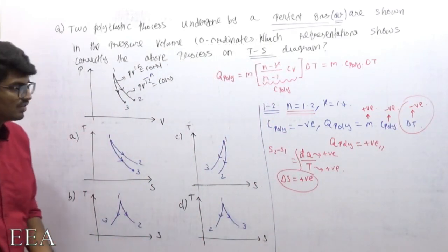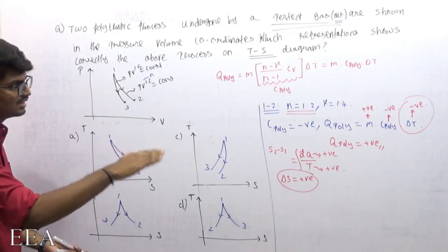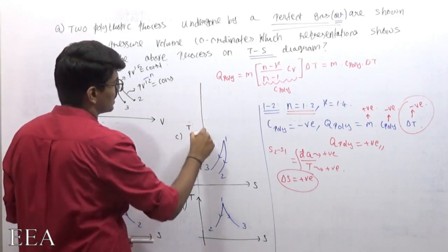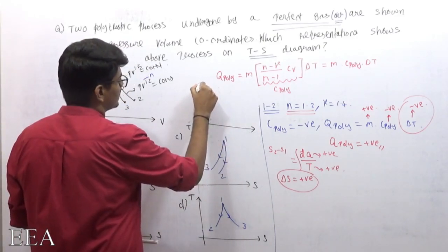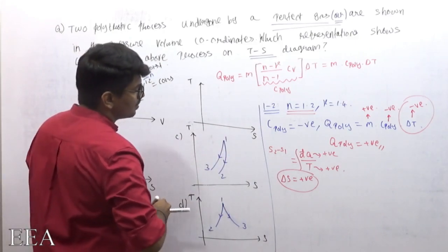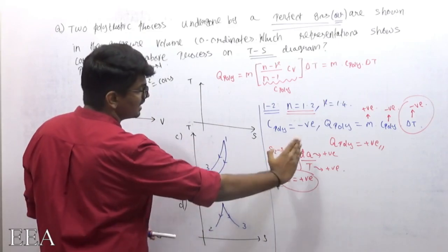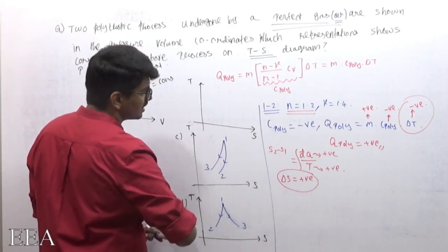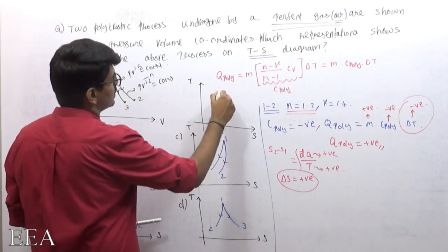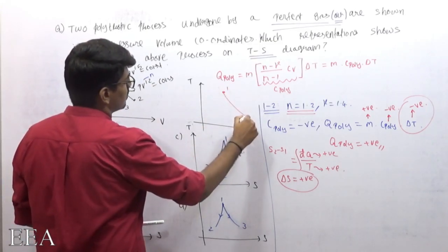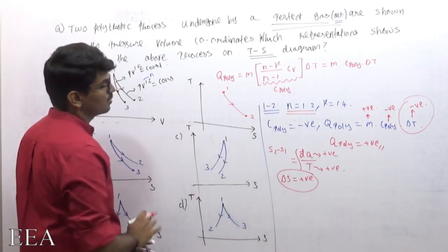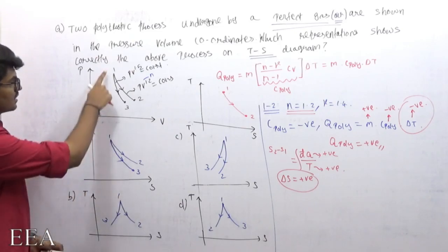So for process 1 to 2: entropy change is positive, meaning entropy increases; and temperature change is negative, meaning temperature decreases. On the TS diagram, entropy increases left to right, and temperature decreases from top to bottom. So my curve goes from 1 to 2 with temperature decreasing and entropy increasing.